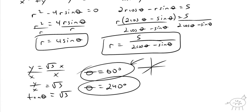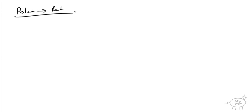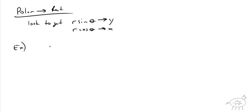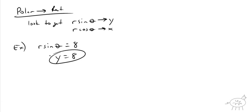One more thing to do: going from polar to rectangular equations. You want to find r sine theta and change it to y, and r cosine theta and change it to x. First example: r sine theta equals 8. That's easy — r sine theta is y, so y equals 8.